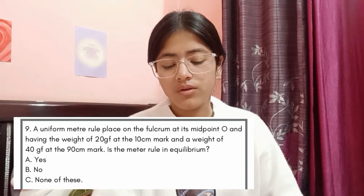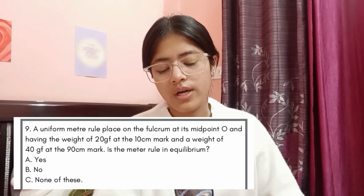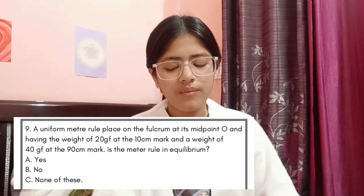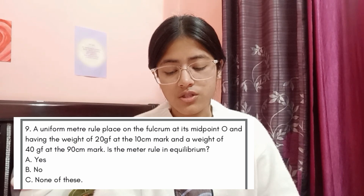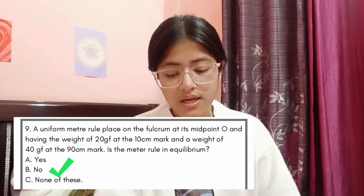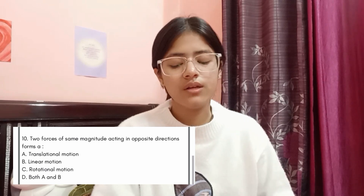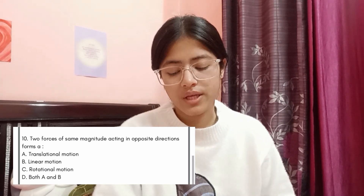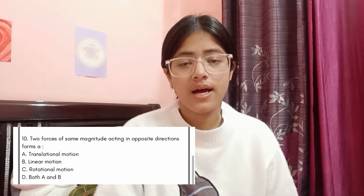Question 9: a uniform meter rule placed on a fulcrum at its midpoint O, with a weight of 20 gf at the 10 cm mark and a weight of 40 gf at the 90 cm mark — is the meter rule in equilibrium? Option A: Yes, Option B: No, Option C: None of these. The answer is Option B, No. Question 10: two forces of the same magnitude acting in opposite directions form — Option A: translational motion, Option B: linear motion, Option C: rotational motion, Option D: both A and B. The answer is Option C, rotational motion.